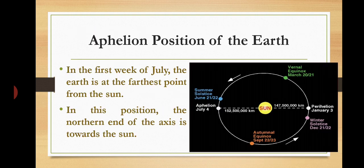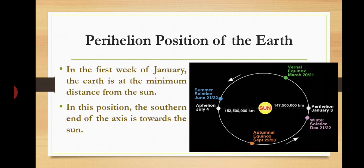Aphelion position of the Earth: in the first week of July, the Earth is at the farthest point from the Sun. In this position, the northern end of the axis is toward the Sun. Perihelion position of the Earth: in the first week of January, the Earth is at the minimum distance from the Sun. In this position, the southern end of the axis is toward the Sun.